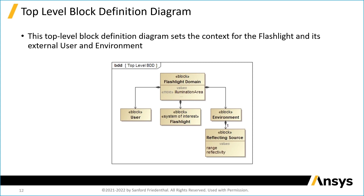MOE stands for measure of effectiveness — a measure of goodness of the overall mission from which we can derive lower-level critical parameters for the system. We've identified this top-level measure of goodness called illumination area. We also added detail to the environment: a reflecting source with a range and reflectivity — a simple model of the environment, showing how we begin to elaborate it as needed to support the design of the flashlight.